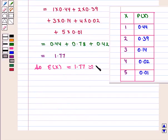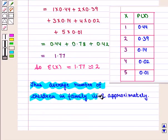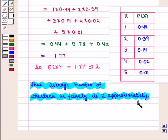So we get the expected value of capital X as 1.77, which is approximately equal to 2. Thus the average number of children in a family is approximately 2, which is the required answer. This completes our session. Hope you enjoyed this session.